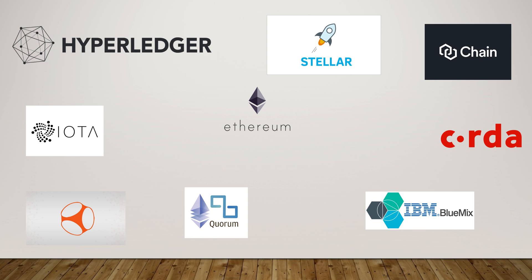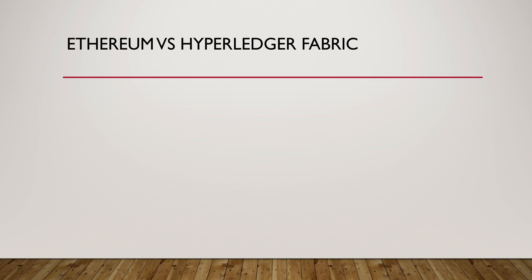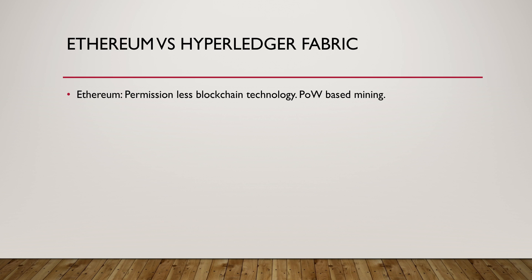Let me take you through some of the important features of Fabric and contrast them with Ethereum, and then you can make your educated choice on which platform you would rather build your brilliant blockchain idea on. Ethereum is a permissionless blockchain technology, which just means that anyone in the world can participate anonymously. The type of network — whether it is permissioned or permissionless — makes a huge difference on how consensus is reached. The permissionless blockchain model has inferior performance and scalability as compared to the permissioned model.